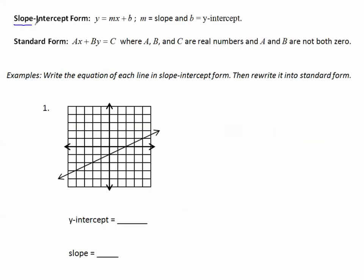Let's recall what slope-intercept form and standard form look like. Slope-intercept form is y equals mx plus b, where m is the slope and b is the y-intercept.